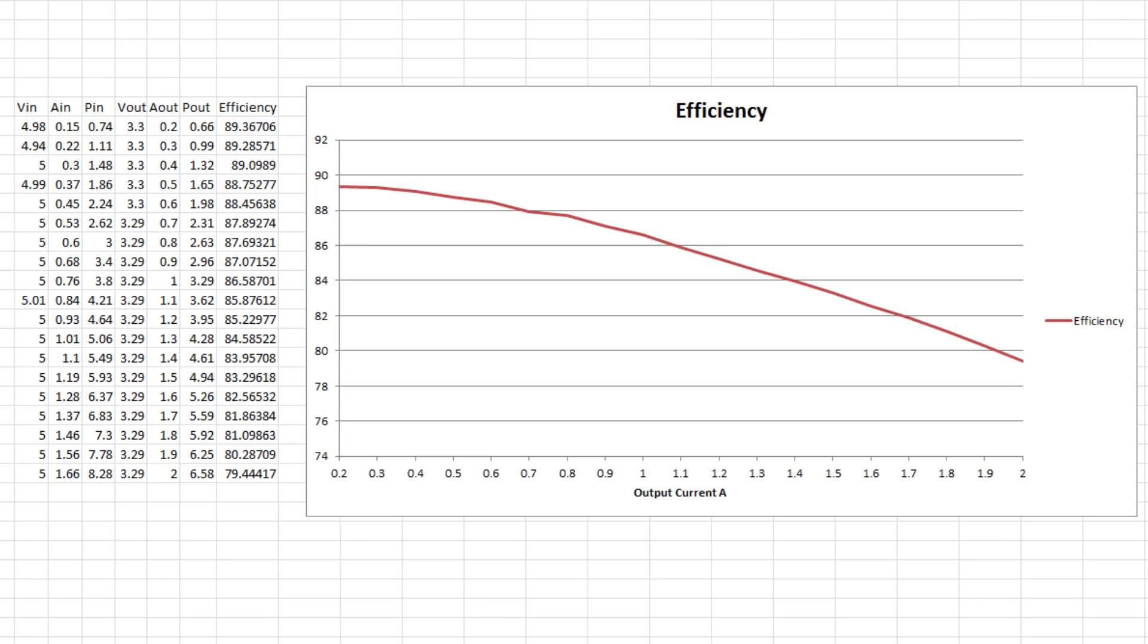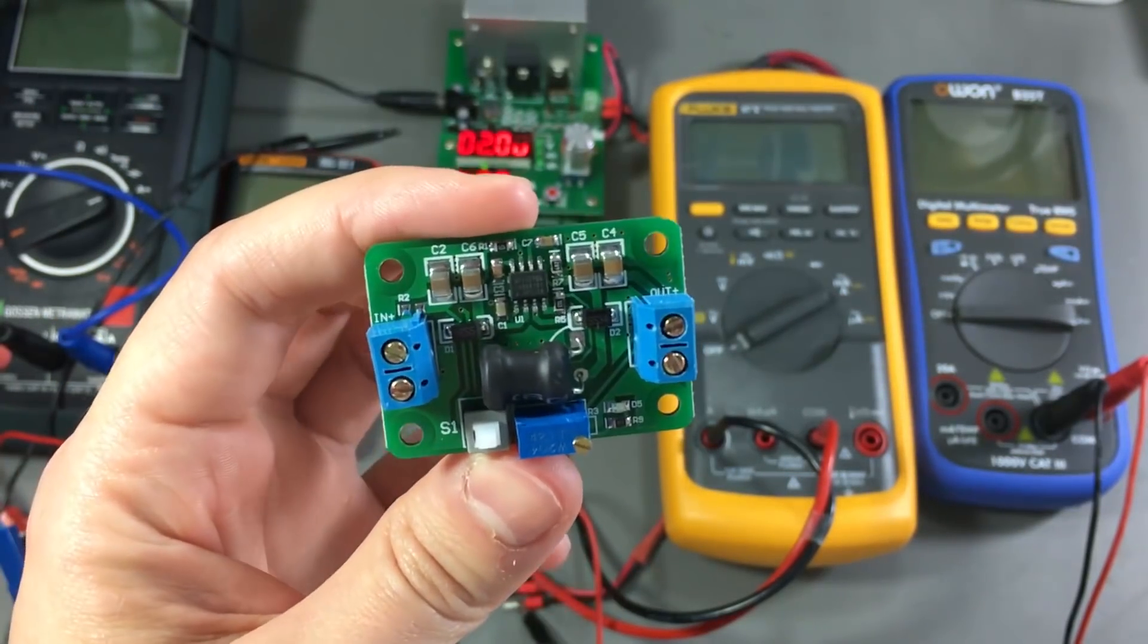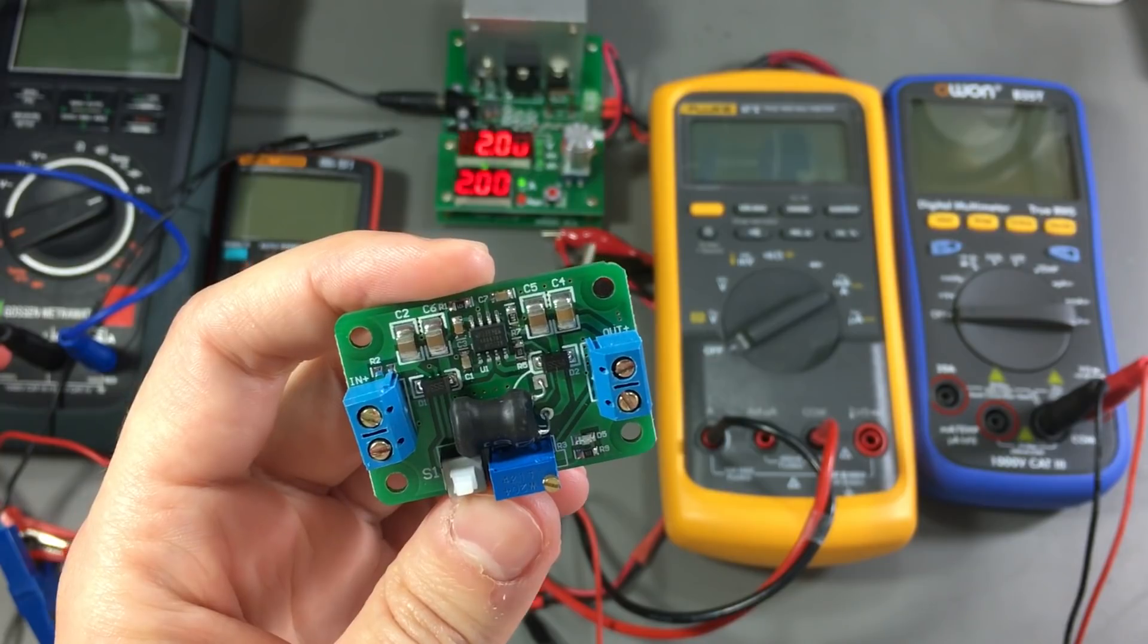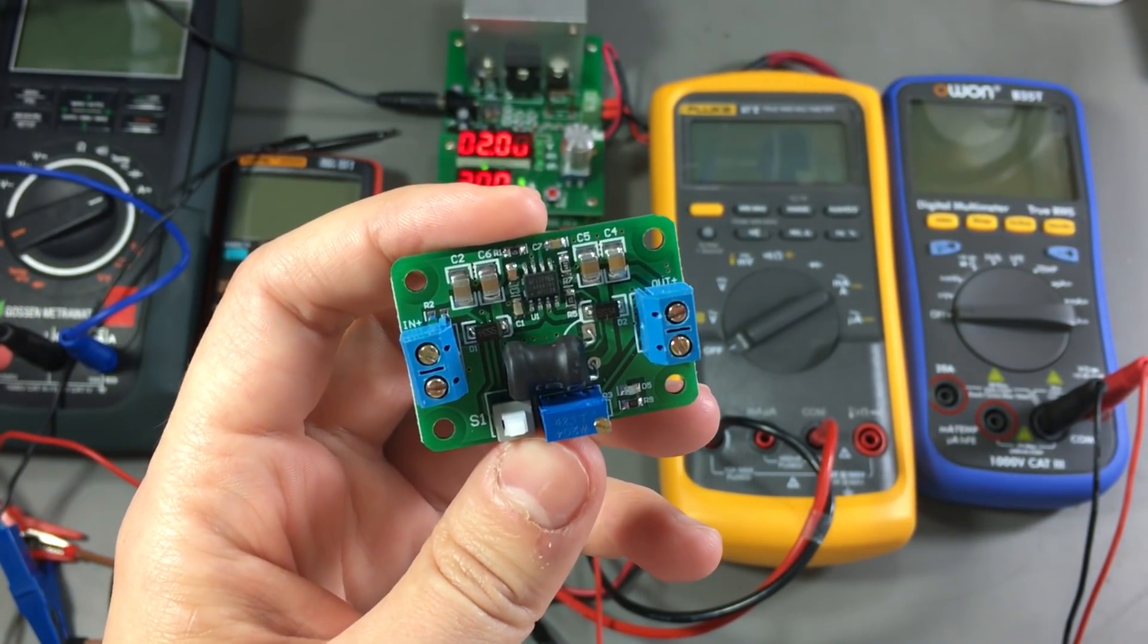But we kind of expected this kind of results, because we noticed that input diode prior to starting the testing, and we also noticed the layout is not done according to the recommended layout from the datasheet. So we've shown that this converter doesn't come close to the advertised 95% efficiency figure.